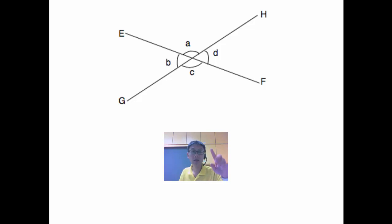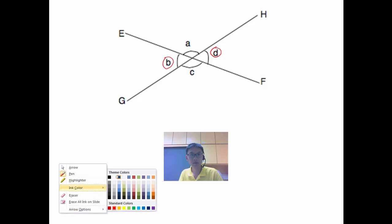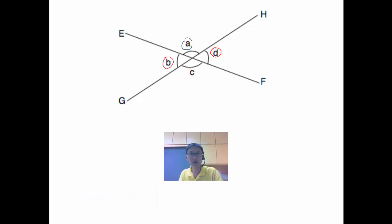Given these two straight lines, EF and GH, I want to prove that B is equal to D, as well as A is equal to C. Because that's vertically opposite angles—B and D are equal and A and C are supposed to be equal.